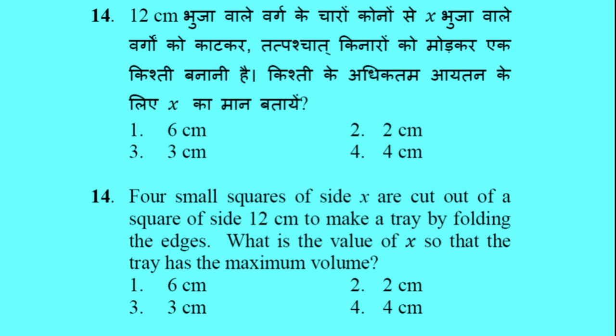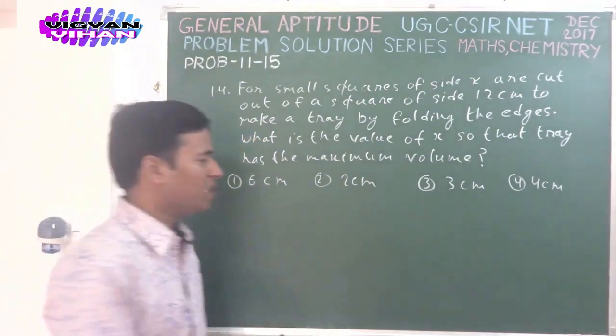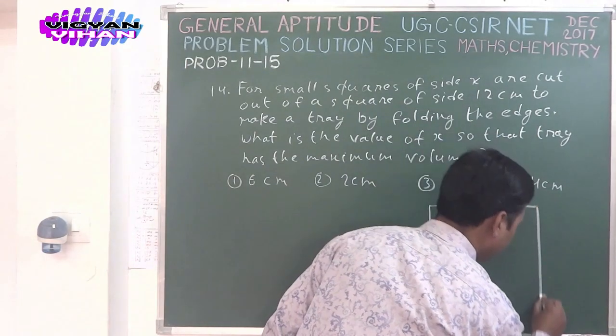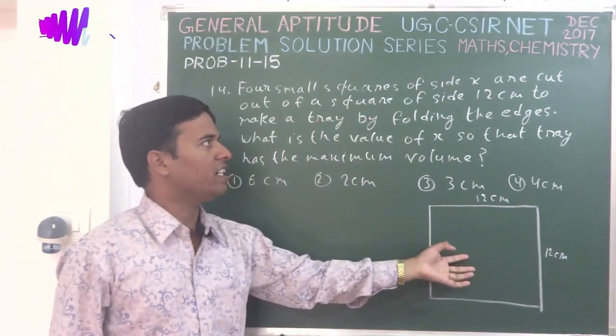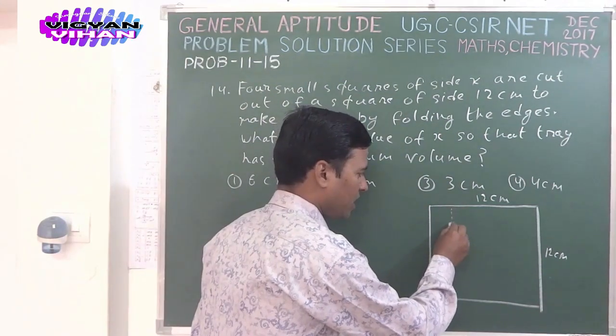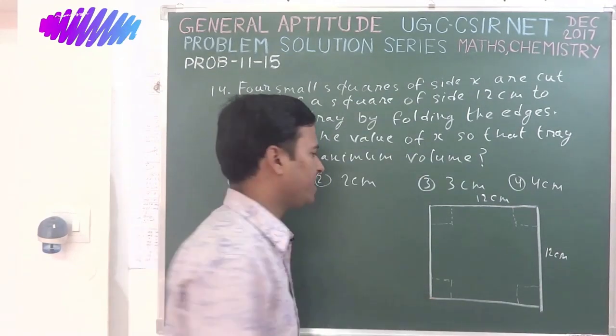Problem number 14: Four small squares of side X are cut out from a square of side 12 cm to make a tray by folding the edges. What is the value of X so that the tray has the maximum volume? Option 1: 6 cm. Option 2: 2 cm. Option 3: 3 cm. Option 4: 4 cm. In this problem there is a bigger square of side 12 cm, and 4 small squares of side X are cut from its corners. When we fold the edges to make a tray, its height equals X, and the base length equals 12 cm − 2X, as does its breadth.